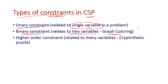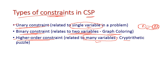In a binary constraint, before assigning any value we need to test the value of the previous variable as well — the constraint affects two different variables, so this is called a binary constraint. The third type is a higher-order constraint, where the constraint relates to many variables. For example, in a cryptarithmetic puzzle, before assigning any value we must consider many variables simultaneously. We need to concentrate on more variables before assigning a value to a particular variable. This is called a higher-order constraint.